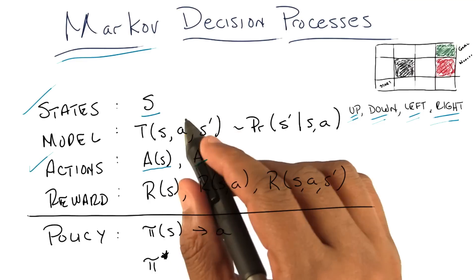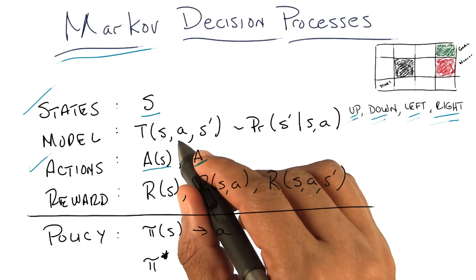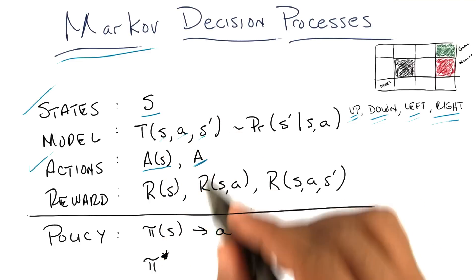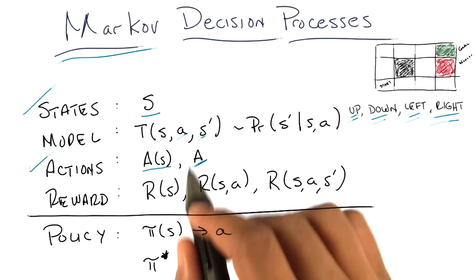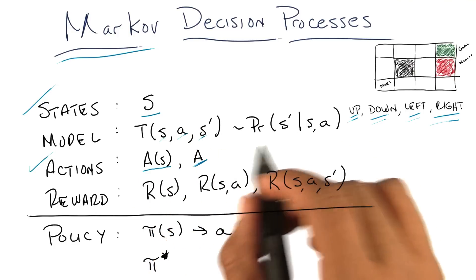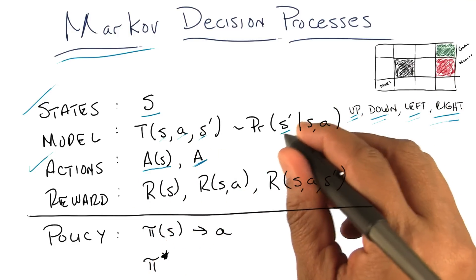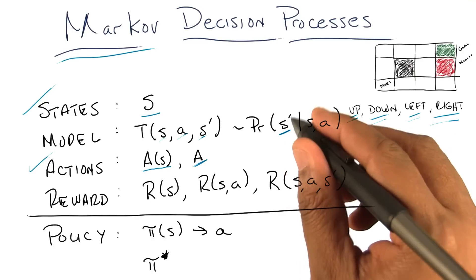So it's a function of three variables: a state, an action, and another state, which, by the way, could actually be the same state. And what this function produces is the probability that you will end up transitioning to state s prime, given that you were in state s and you took action a.